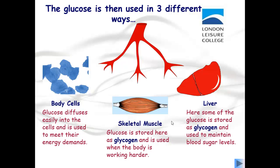Finally, some of the glucose is stored as glycogen in the liver and used to maintain blood sugar levels. For example, if people suffer from hypoglycemia, when their blood sugar levels are low, the liver converts some of this glycogen back to glucose to raise blood sugar levels.